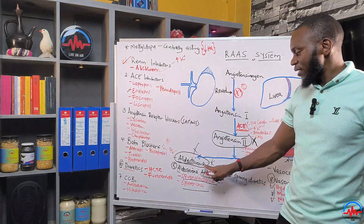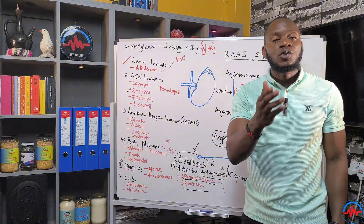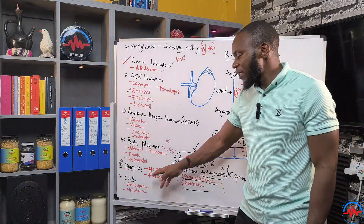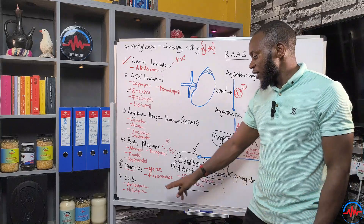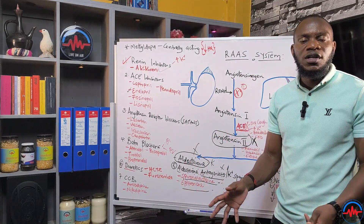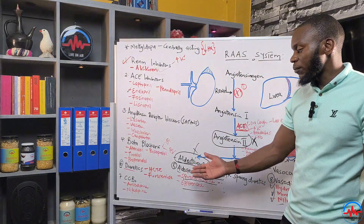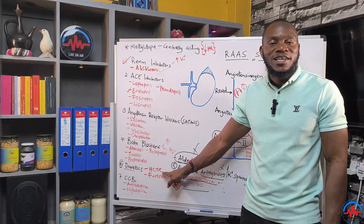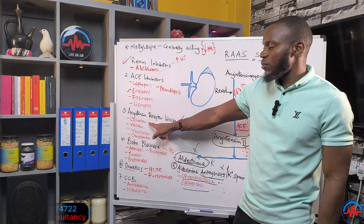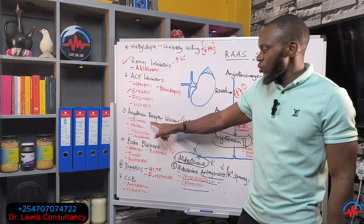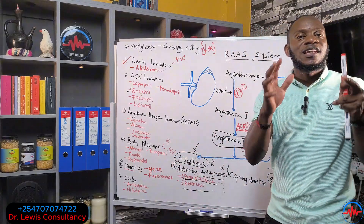Another class is the diuretics. Spironolactone/aldactone is part of the diuretics. We also have furosemide — most of you call it Lasix — which increases release of water from the kidneys, so you urinate a lot. This helps with heart problems, kidney problems, and hypertension. There is also hydrochlorothiazide — HCTZ — which is the one combined with losartan to make losartan H: losartan is the sartan and H stands for HCTZ, the diuretic.